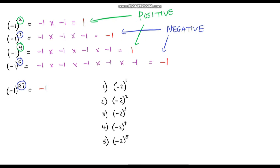Let's evaluate five questions involving powers of negative 2. (-2)¹ has an odd power, so the answer is negative; 2 to the power 1 is 2, giving negative 2. (-2)² has an even power, so the answer is positive; 2 times 2 is 4. (-2)³ has an odd power, so the answer is negative; 2 times 2 times 2 is 8, giving negative 8.